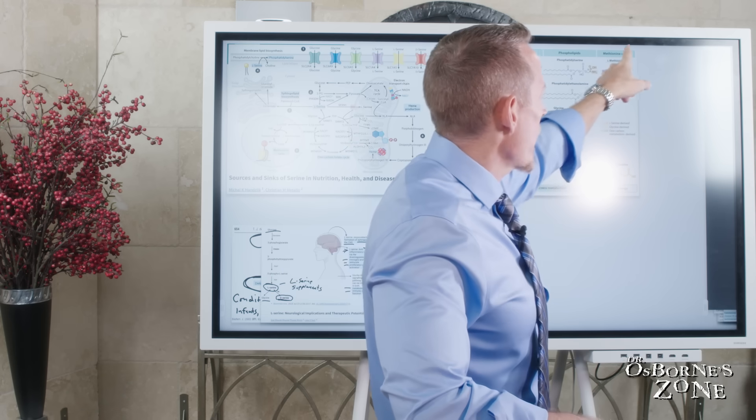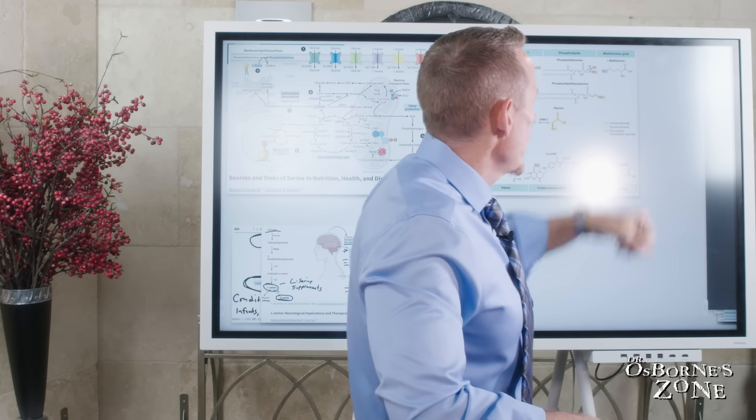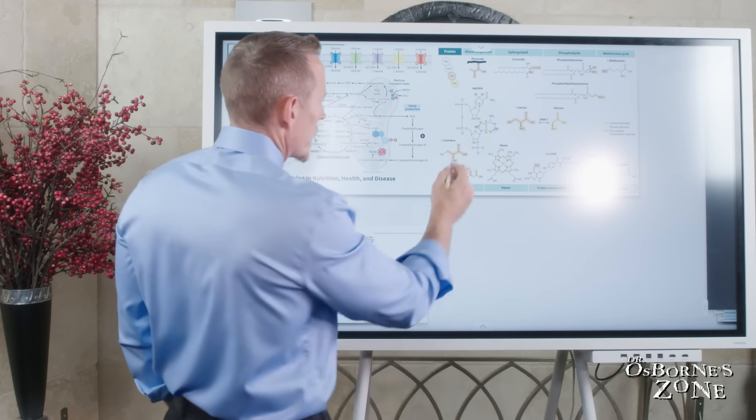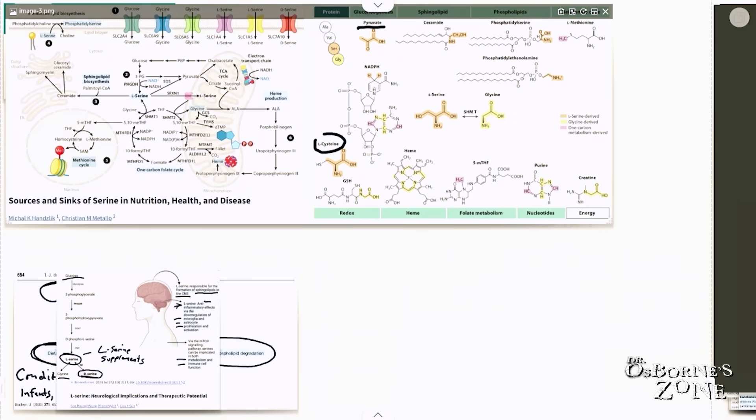We also need it in the methionine cycle, serine. And we also need it down here. You can see serine helps us to make L-cysteine. L-cysteine is a direct precursor amino acid to GSH, this is glutathione. Anytime you see that term redox, this is antioxidant function, which is how you prevent an accumulation of toxins. And it's also how you protect the body from accelerated degradation and aging.